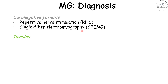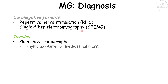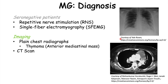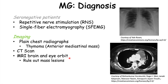Imaging can also be performed in patients suspected of having myasthenia gravis. Plain chest radiographs can look for a thymoma, which is an anterior mediastinal mass — a growth or enlargement of the thymus gland. A CT scan can also be performed to look for a thymoma. An MRI of the brain and eye orbit can also be performed to rule out mass lesions, which can help rule out other possible causes of ptosis or double vision.